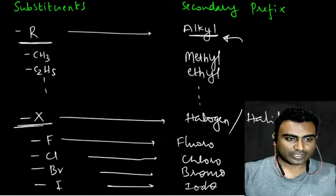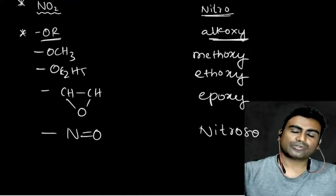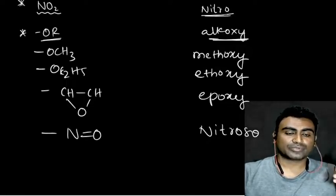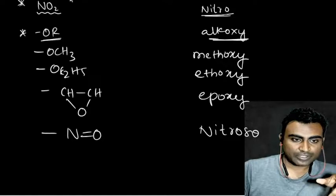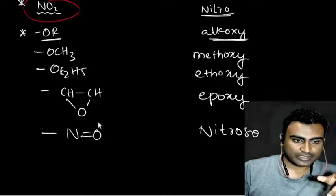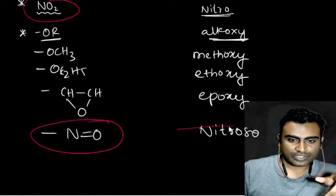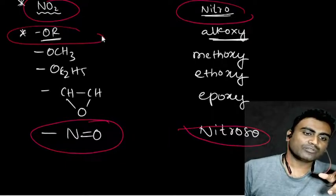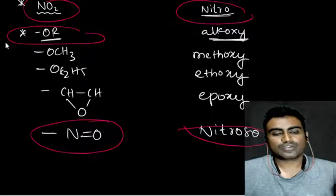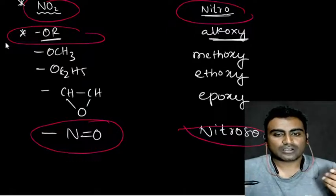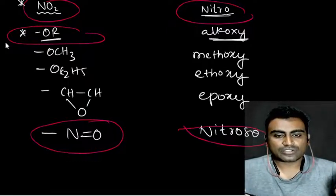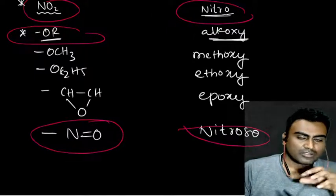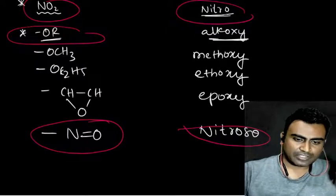Do not take confusion between the nitro group and the nitroso group. The nitro group is NO2, and the nitroso group is N=O. Another secondary prefix is the alkoxy group — methoxy, ethoxy — these are all part of the alkoxy group.